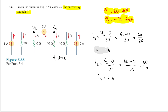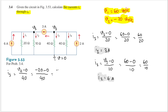Now for i3: using the same logic, i3 equals (V2 minus 0) divided by 40 ohms, so i3 equals minus 20 divided by 40, which gives i3 equals minus 0.5 amperes.